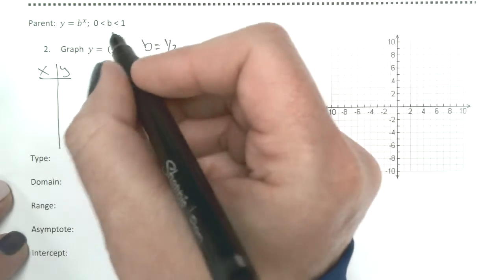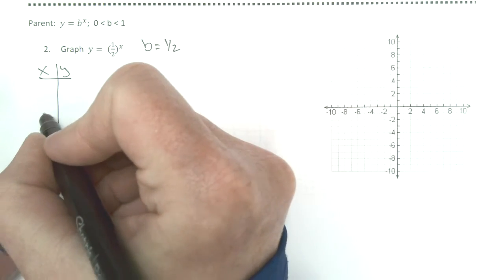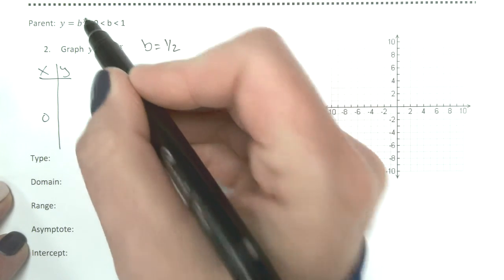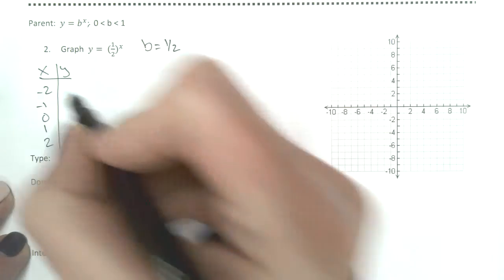So in all these, I'm basically going to start with whatever it takes to make your exponent 0 in the middle. Bigger, bigger, smaller, smaller.